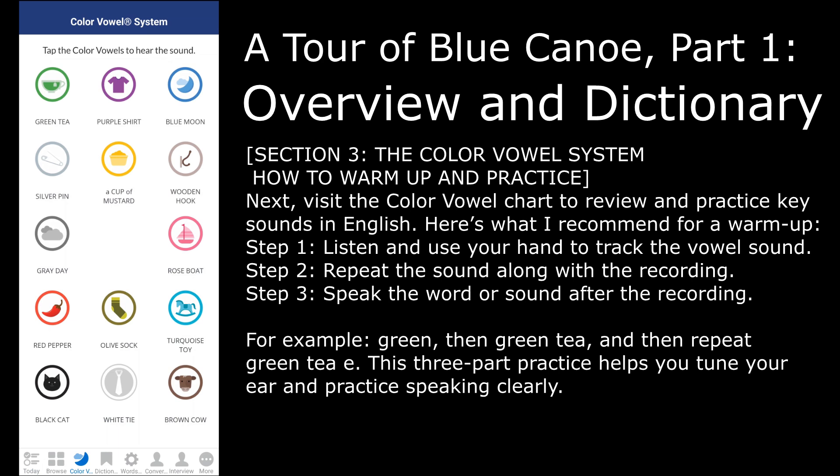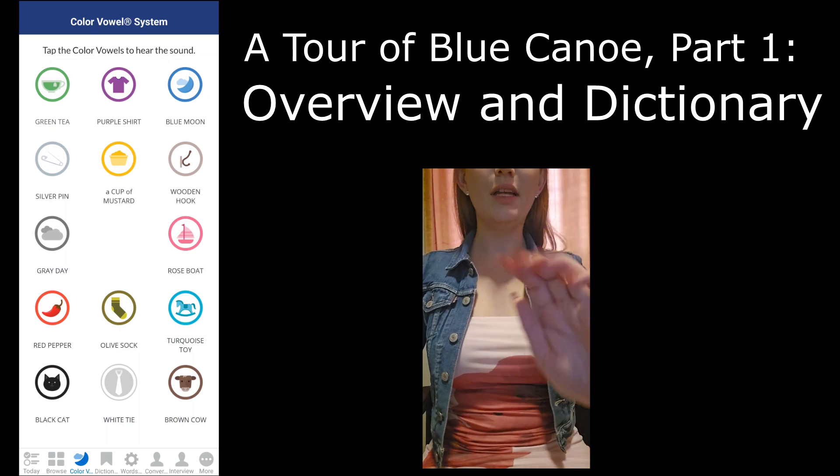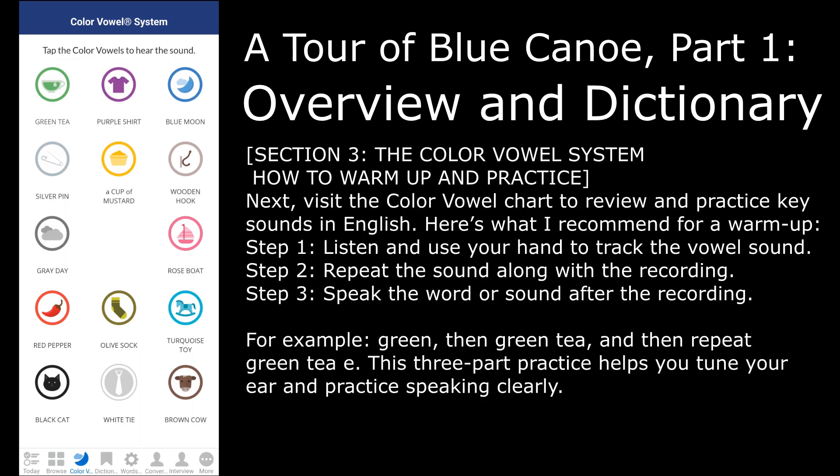Next, visit the color vowel chart to review and practice key sounds in English. Here's what I recommend for a warm-up: listen and use your hand to track the vowel sound, repeat the sound along with the recording, and speak the word or sound after the recording. For example: green, then green tea, then repeat green tea — ee. This three-part practice helps you tune your ear and practice speaking clearly.